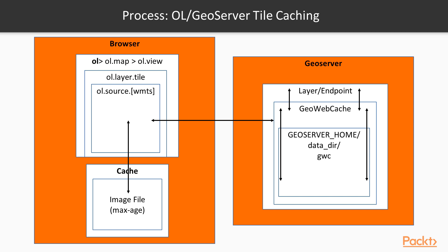This diagram explains how tile caching works with GeoServer. On the browser side, we have a map client like OpenLayers. In the OpenLayers source there's a WMTS class that we can use for WMTS type tile cache schemes, with other classes available for other schemes. The OpenLayers app first checks the browser cache to see if a tile is already available for the given map view. Note that the max age of the image file can be set within GeoServer to limit the caching of tiles, which is especially useful for debugging purposes.